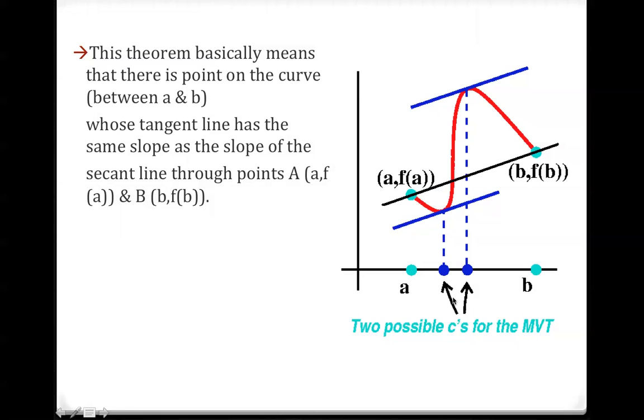So these are two possible values of c. The tangent line has the same slope and it is between these points.